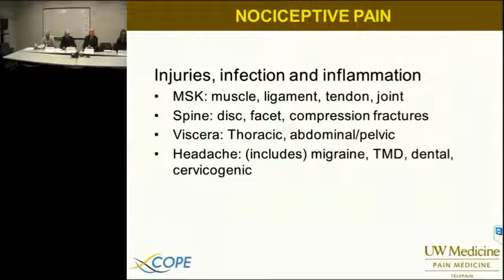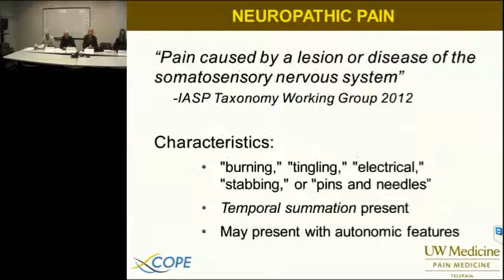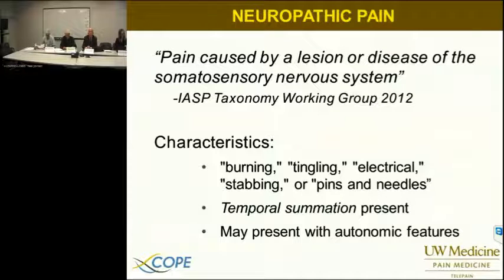The nociceptor in headache is the trigeminal ganglion. This includes temporomandibular disorders, dental factors, and cervicogenic pain arising from the neck. Neuropathic pain differs — it's very important because our treatments are different for the management, our expectations of outcome differ, and the disease states that cause these are also different.